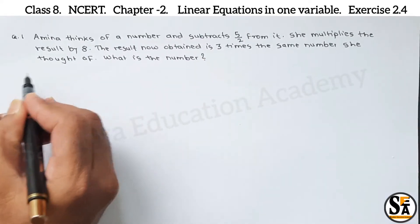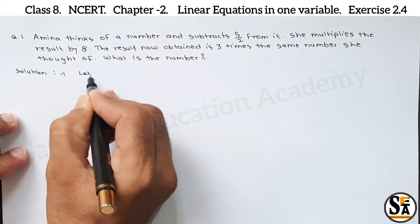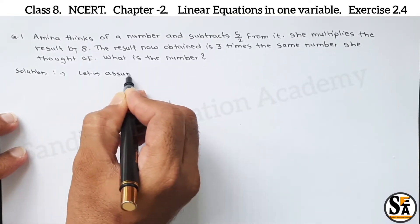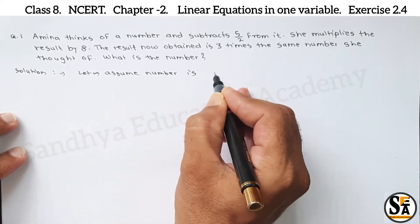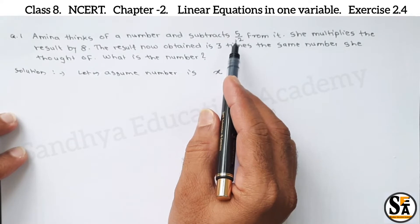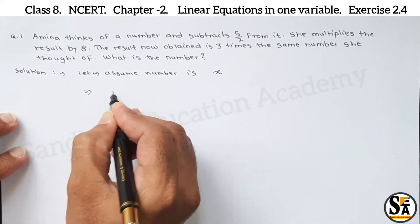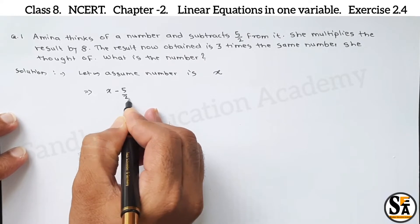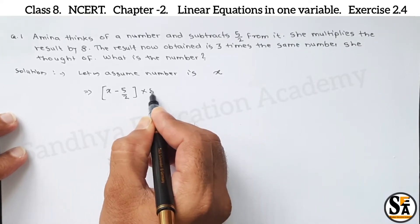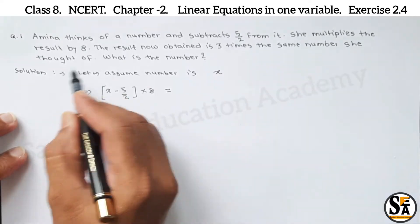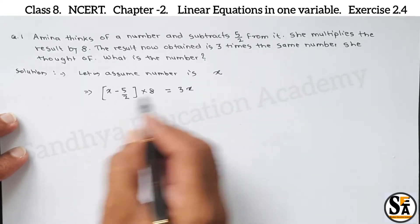In the question a number is asked and some conditions are given. So we will start our solution. First, let's assume the number is x. From the conditions given in the word problem: number subtract 5 by 2, so we write x minus 5 by 2, and multiply the result by 8. So the answer will be 3 times the same number she thought of, that is 3x. This is our linear equation.